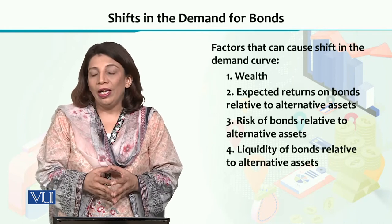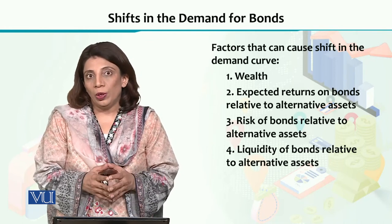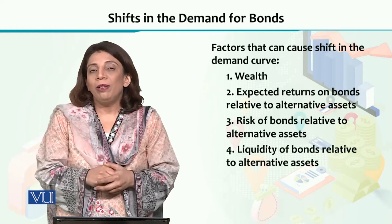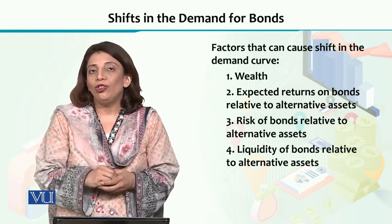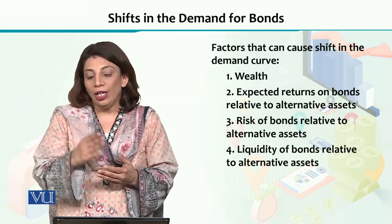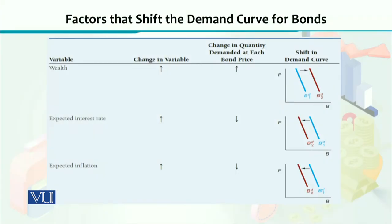चौथा एक और बहुत एहम factor है, and that is the liquidity of bonds. अगर हम देखते हैं कि over a period of time किसी भी financial instrument की liquidity में कमी हो गई है या इजाफा हो गया है, तो ये कमी और इजाफा भी आपके demand curve को shift करने में मदद देती है. उसको देखने के लिए यहां मैं आपके साथ कुछ diagrams को discuss करने जा रहा हूँ.